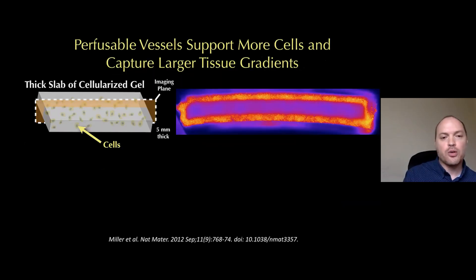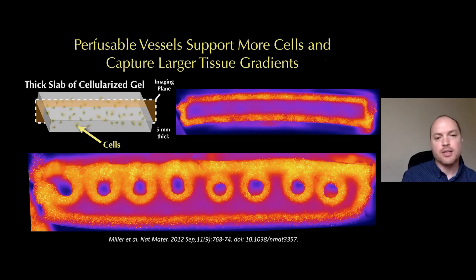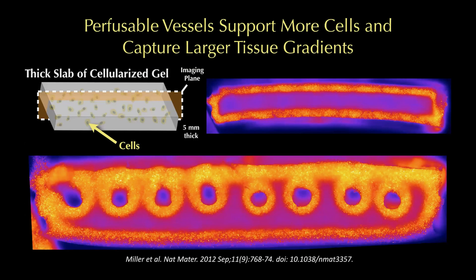We showed that if you have simple channels inside these gels, you can get flow through them. When you have that flow, each individual vessel — here we're looking at 800 micron vessels inside tissue slabs — is able to keep a circumferential volume of cells alive, in contrast to tissues that don't have any vessels. But it's not a perfect job; we still have lots of dead zones in the tissue that we needed to optimize.